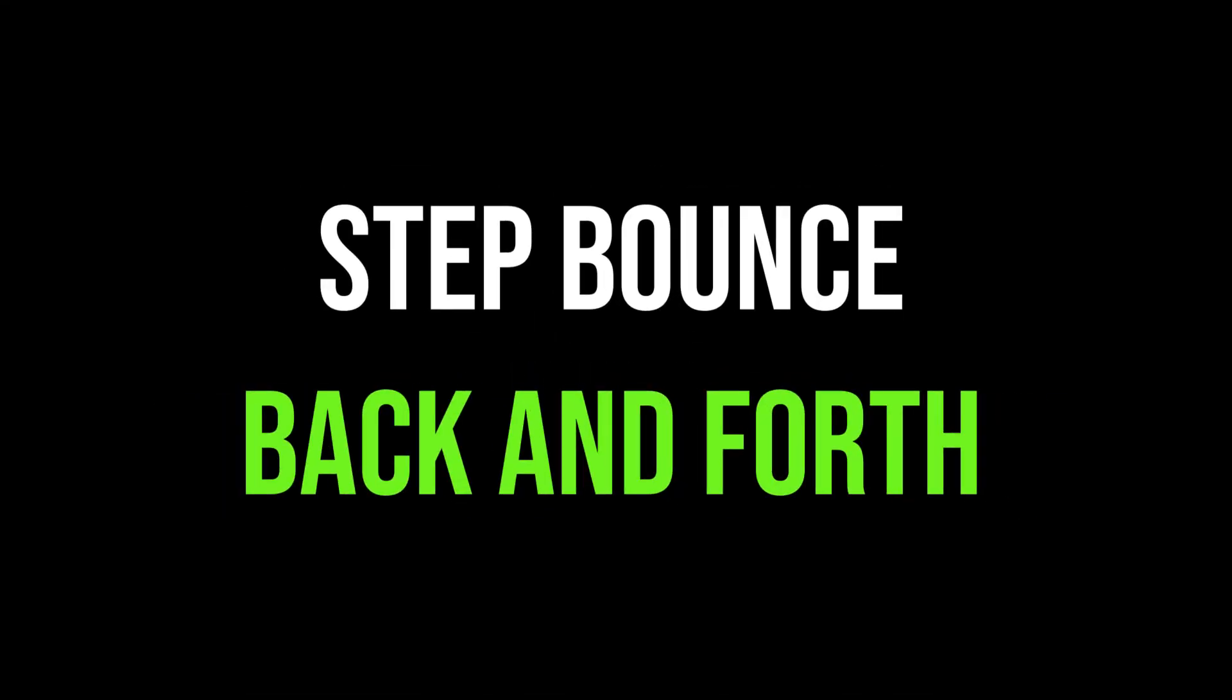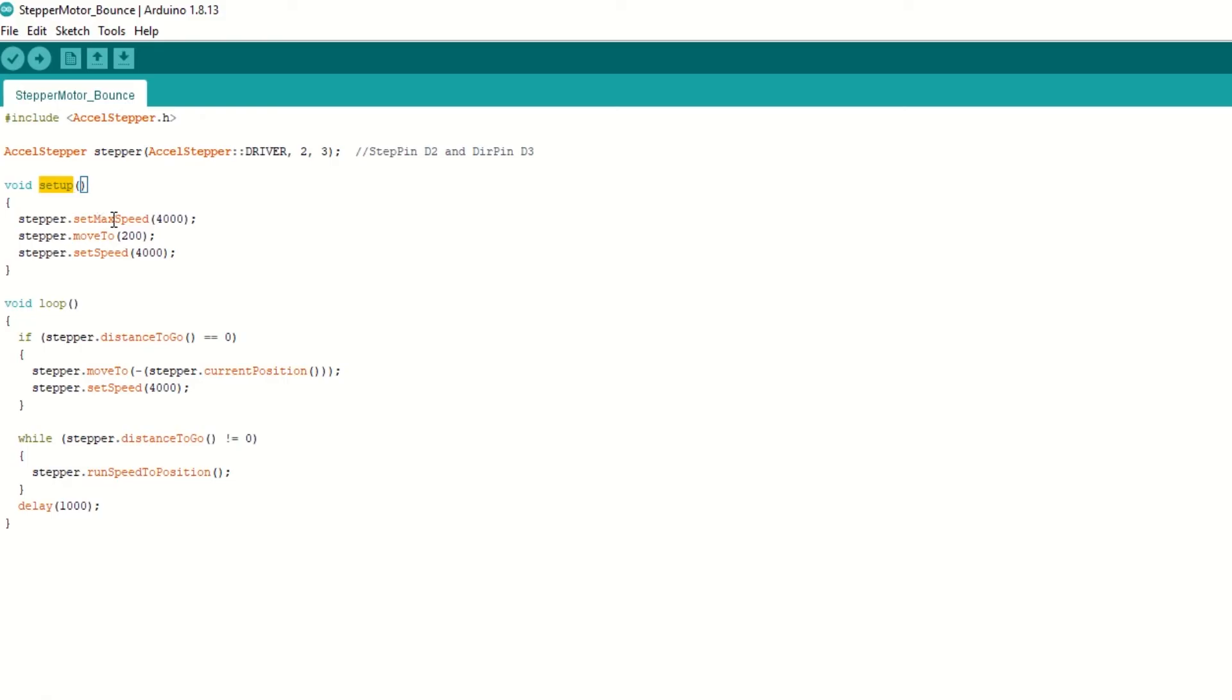Inside setup function we move the stepper to 200 steps with constant speed of 4000 steps. Inside loop function, check if stepper motor reached its position by checking distanceToGo equal to zero. If yes, then move the stepper motor to opposite position from its current position. Then we need to call runSpeedToPosition function until the position is reached.